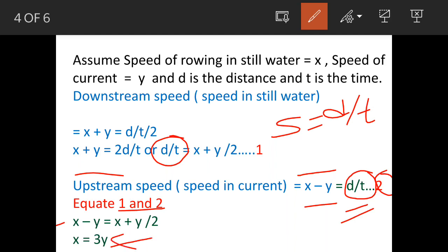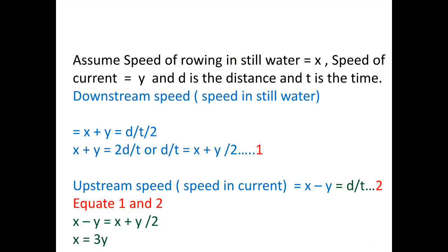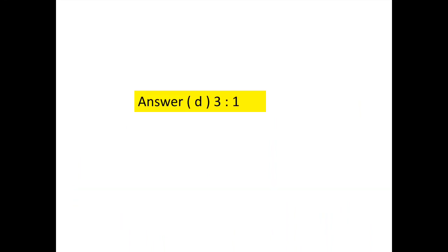That means the ratio of speed of the boat to speed of current is 3 is to 1. This is the answer. Thank you very much and thanks for watching.